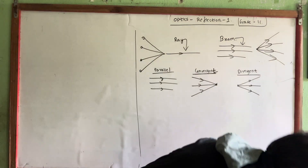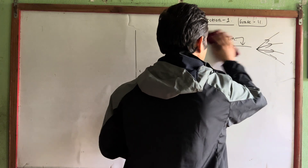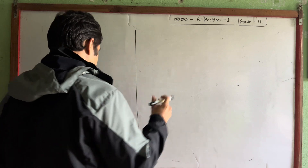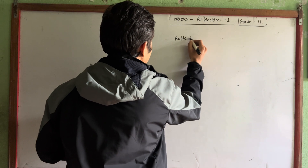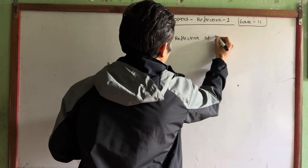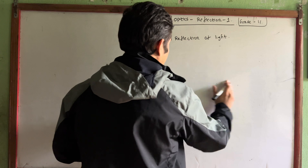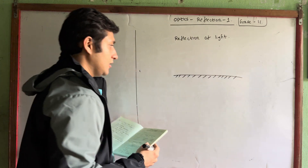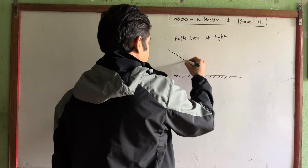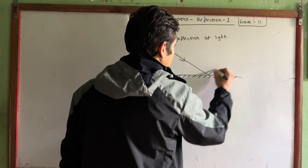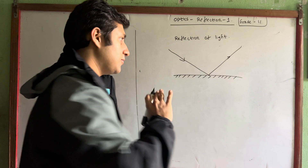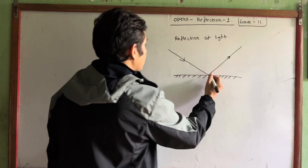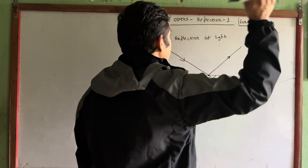So let's move on to the next topic: reflection of light. I will show you the same as a mirror — a surface. It's just like light bouncing back. This phenomenon shows the reflection of light. You can see that light is in the medium and then it goes back to the surface. So it's about the reflection of light.